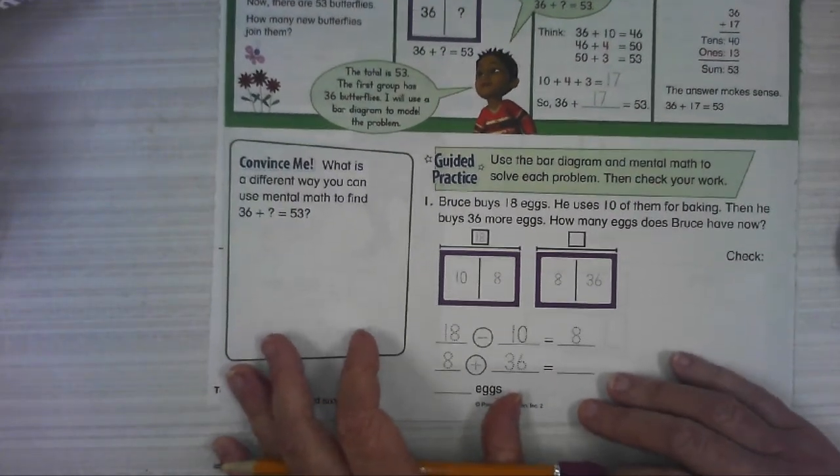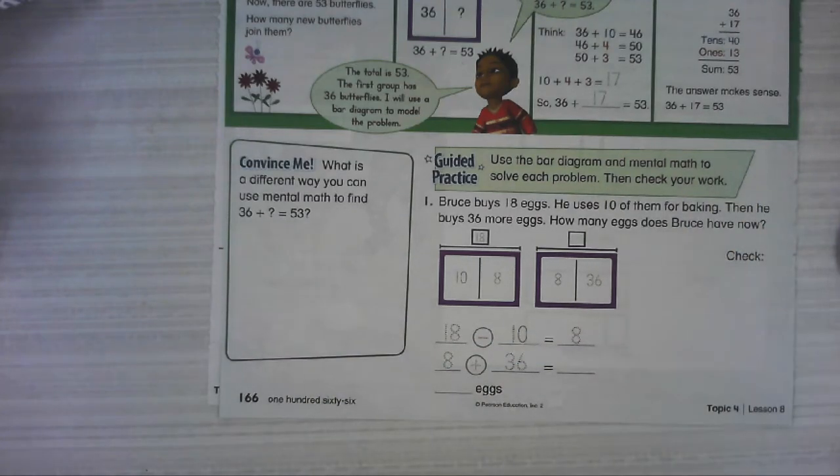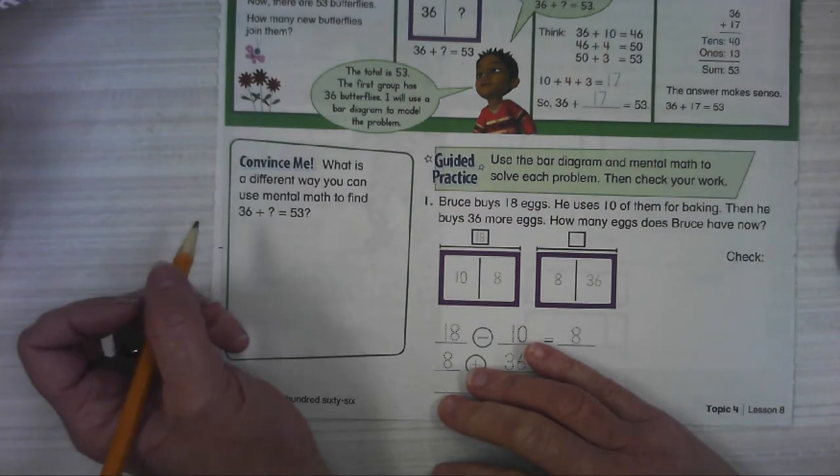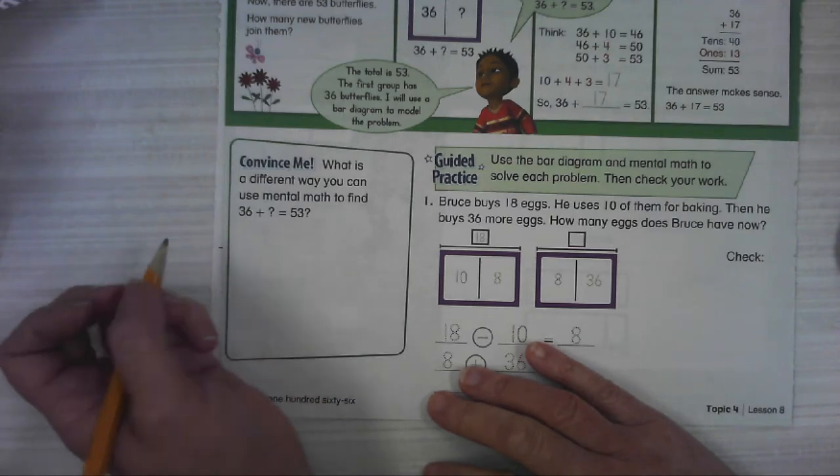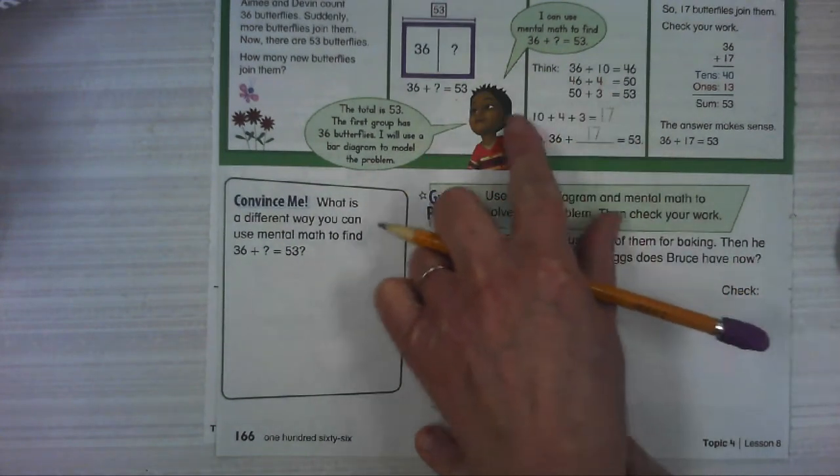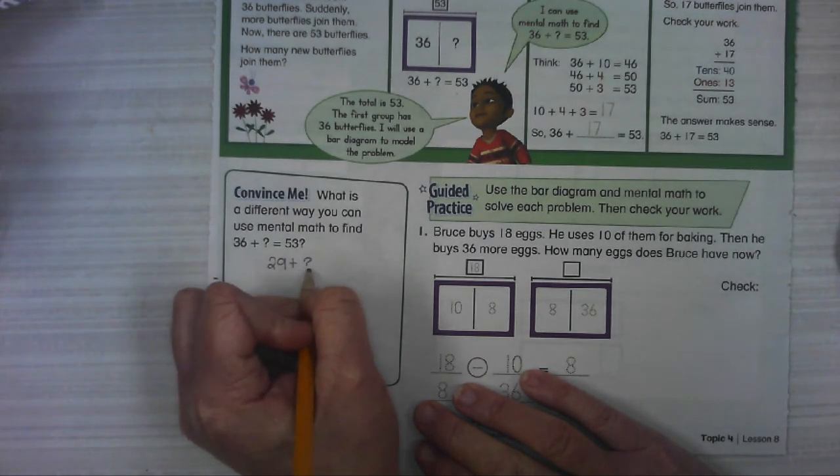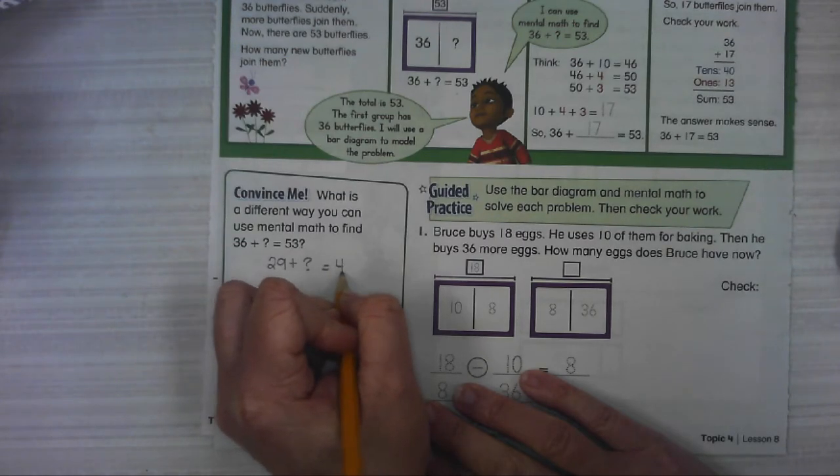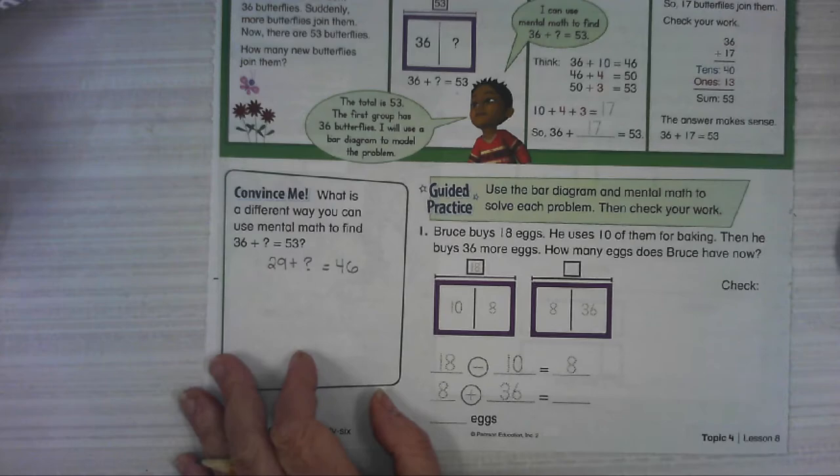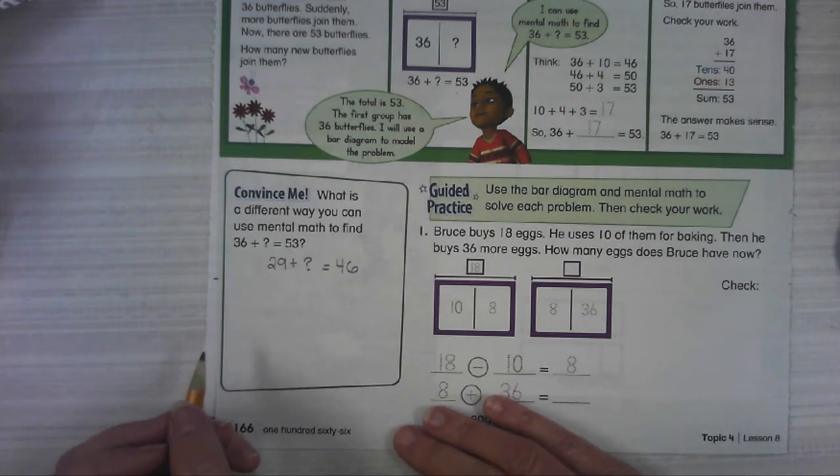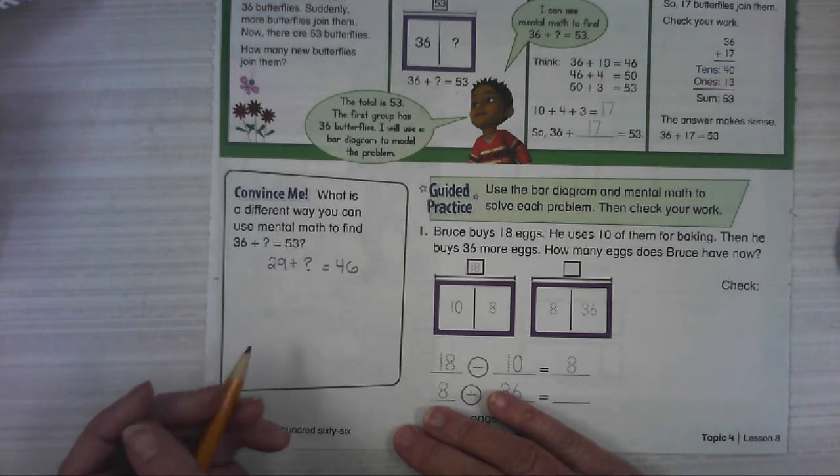So you could show it this way, or you could do this mentally, or this is a way that we could use the number line to do that. All right, what is a different way you can use mental math to find 36 plus 53? See if you can think of another way. If you are having a hard time with it, I'll give you another equation that you can use. Pause it, and then once you're ready to see if you did it the same way I did, then go ahead and hit play.